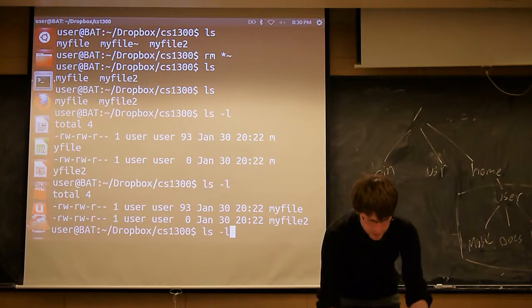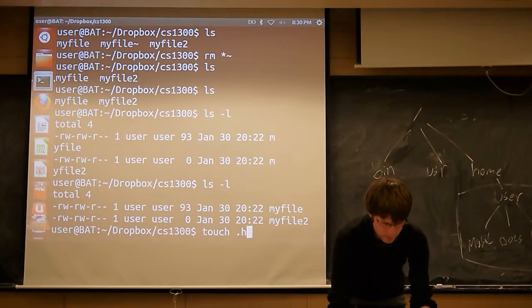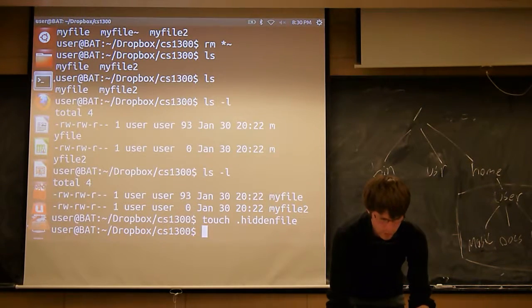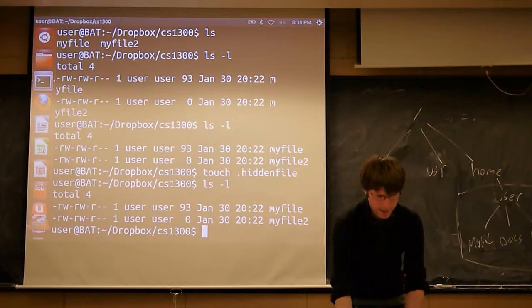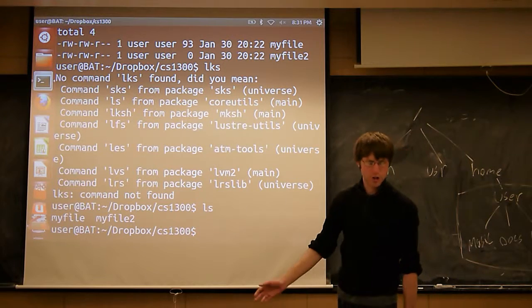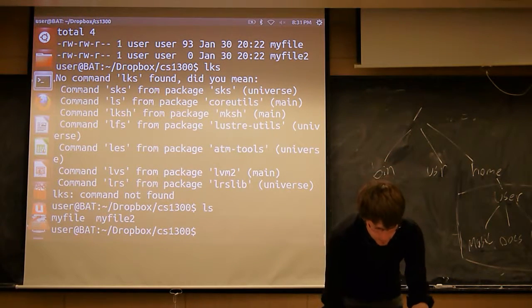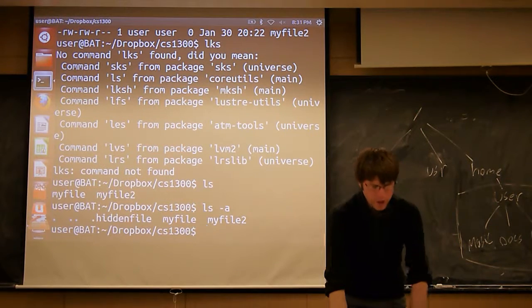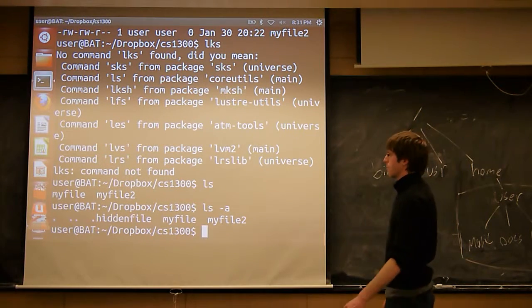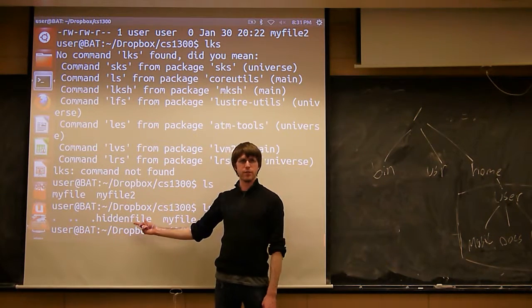So if we had a file called dot text, it wouldn't be displayed right here. Matter of fact, we can make that. So if I do touch and I'm going to do dot hidden file or whatever you want to call it. So if I do ls -l or if I just do ls, it's not showing me that file I just created. So if we want to see the hidden files, you need to do ls -a, A being from all. And when we do the dash -a, we'll see now we have this hidden file here as well.